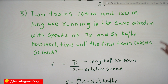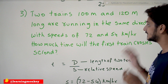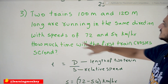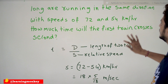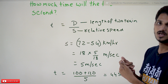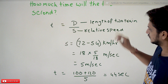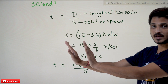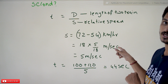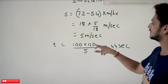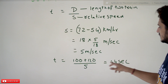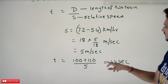Coming to the third example — also a direct question. Two trains, 100 meters and 120 meters long, are running in the same direction with speeds of 72 and 54 km/h. How much time will the first train take to cross the second? Relative speed = 72 − 54 = 18 km/h. Converting: 18 × 5/18 = 5 m/s. Distance = 100 + 120 = 220 meters. Time = 220 / 5 = 44 seconds.